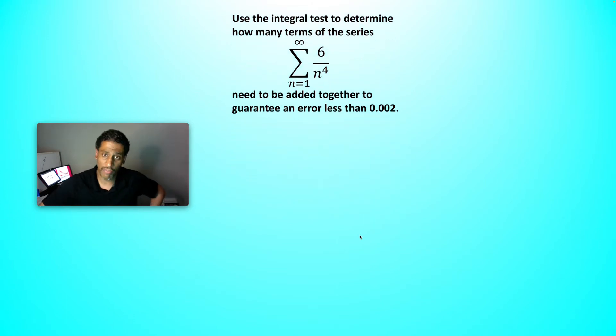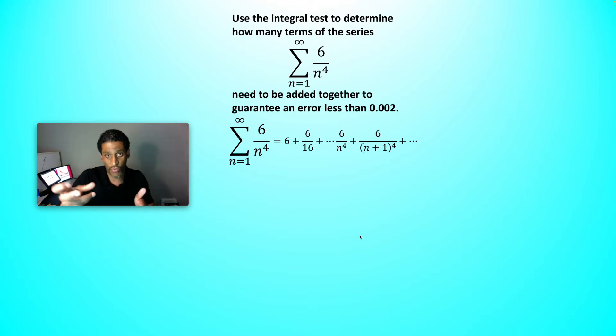We're going to start off by writing out what the series is. When we plug in n equals 1, we have 6. n equals 2, we have 6 over 16. It continues on, and then the generic term is 6 over n to the fourth, that's the nth term. The next one will be 6 over n plus 1 quantity to the fourth, and then it goes on forever.